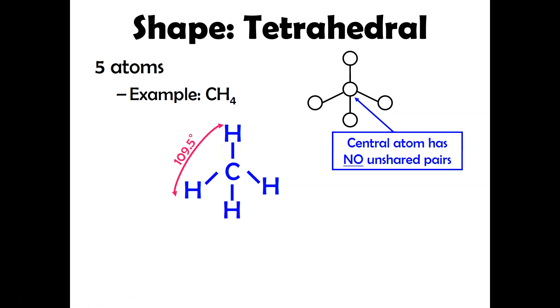In the last example, the unshared pair on the central atom is also considered an electron domain. But whenever you have four electron domains, more often than not, the bond angle is going to be very close to 109.5. But as I mentioned, it can vary, especially if you have an unshared pair on the central atom.